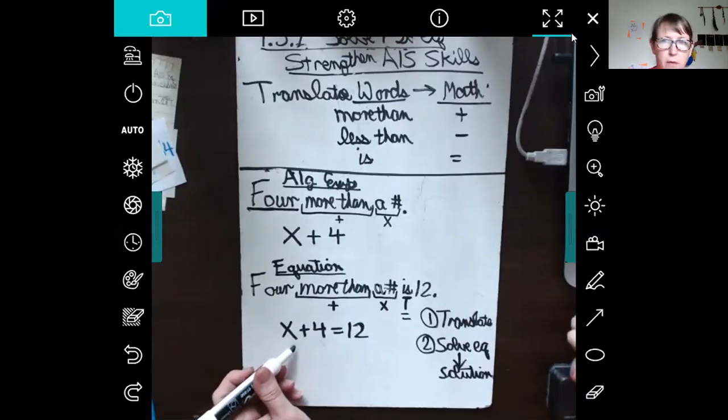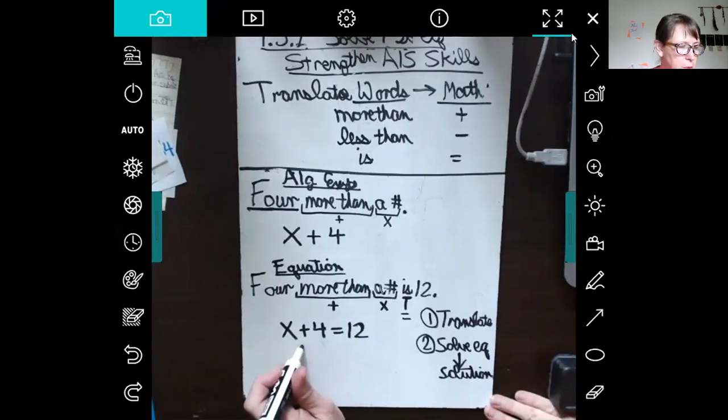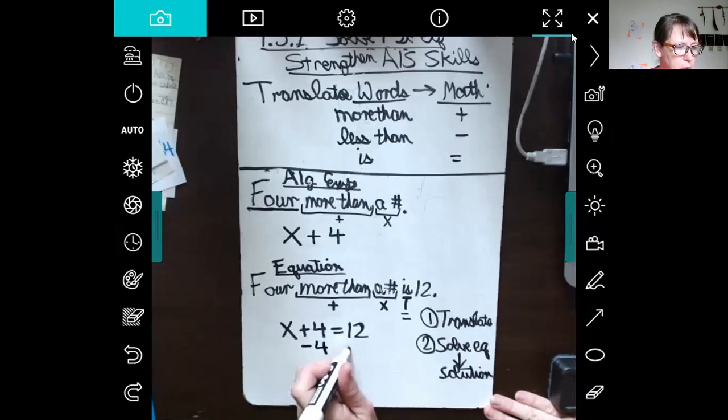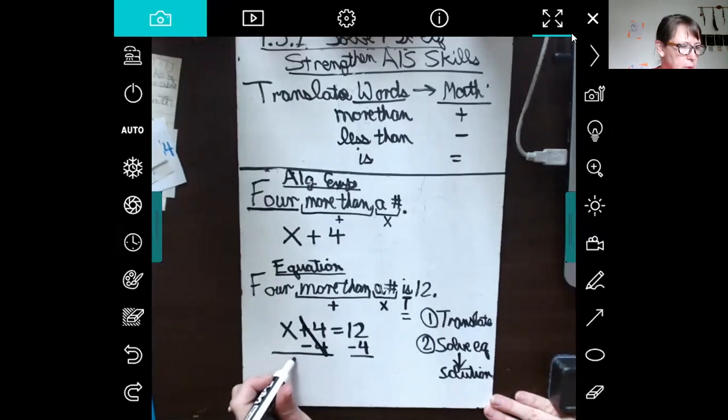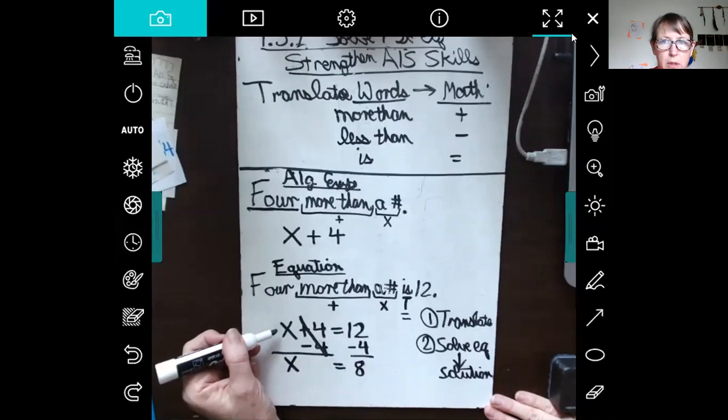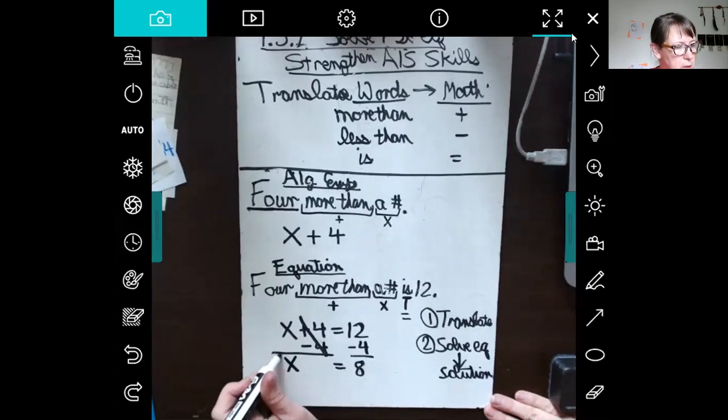Now you're going to solve this equation by asking yourself what's being done to x. It's being added by 4, so you will do the same thing to each side. You will subtract 4 from each side. 4 minus 4 is 0, or cancels to 0. You copy the x, you copy the equals. 12 minus 4 is 8. Remember, you always want to check. Put it back in the original equation: 8 plus 4, does that equal 12? Yes it does, so our solution is x equals 8.